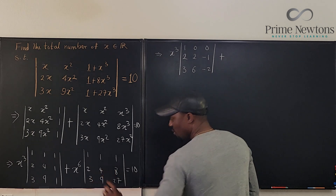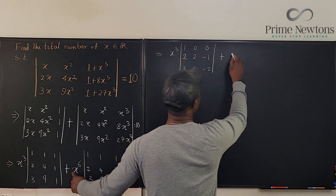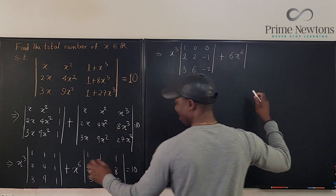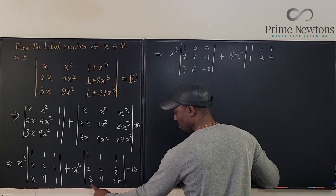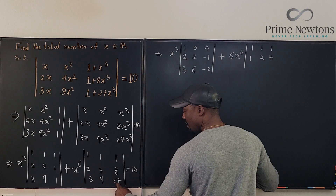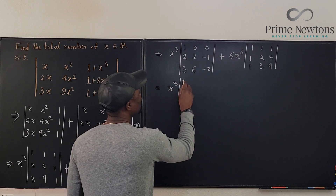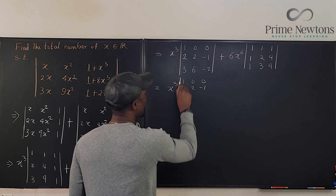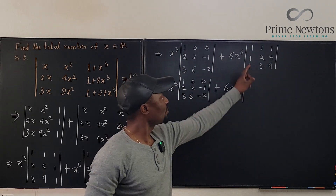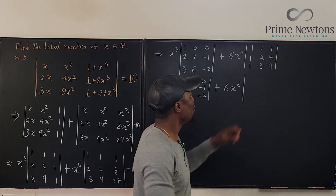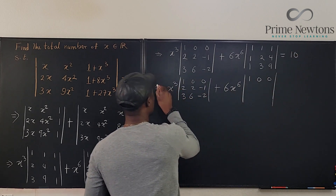For the second determinant, we pull out x from the first column, x² from the second, and x³ from the third, giving x⁶ outside. The skeleton remaining is [1, 1, 1; 2, 4, 8; 3, 9, 27]. We can factor out 3 and 2 to get 6 outside, and similarly reduce. Applying the same column-subtraction trick, the first column becomes [1, 0, 0], and after subtracting we get entries [1, 1, 3; 1, 2, 8]. So we have x³ × det([1,0,0; 2,2,-1; 3,6,-2]) + 6x⁶ × det([...]) = 10.